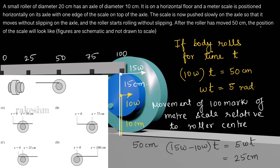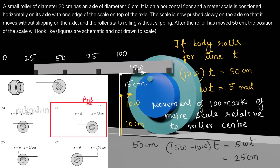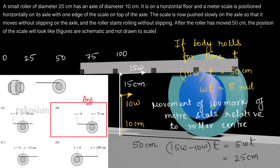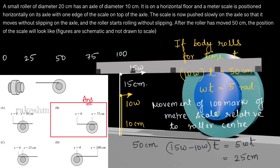Relative to the center, the 100-mark has moved by 50 centimeters in option A. In option B, the 100-mark has moved by 25 centimeters — from 100 to 75, which is 25 centimeters. So option B is the correct answer. Looking at the schematic, you can observe that relative to the center, this point has moved by 25 centimeters.